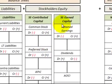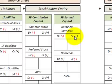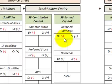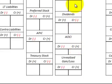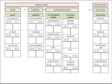Moving to earned capital, we have retained earnings where debits decrease and credits increase. Dividends acts like a contra account where debits increase and credits decrease. Then we have other comprehensive income where debits decrease and credits increase — same as retained earnings. Unrealized gains and losses also follow the same rule: debits decrease, credits increase.